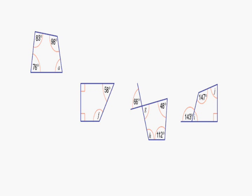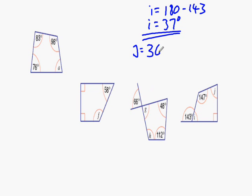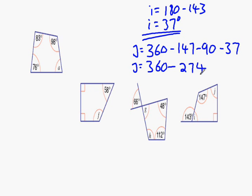I is on a straight line, and so we can figure it out by taking 143 away from 180. This equals 37. Now to figure out J, we must take away 147 degrees, 90 degrees, and 37 degrees from 360 degrees. This can be shortened to 360 take away 274. By doing this calculation, we can figure out that J equals 86 degrees.